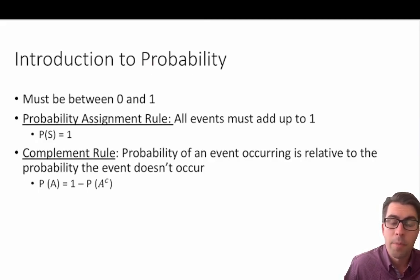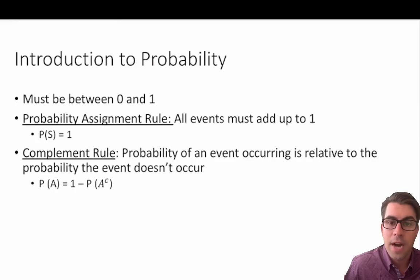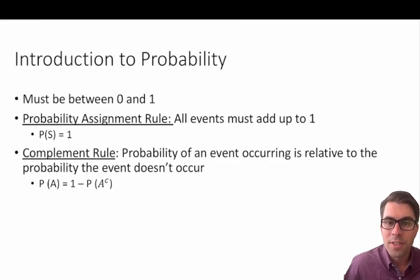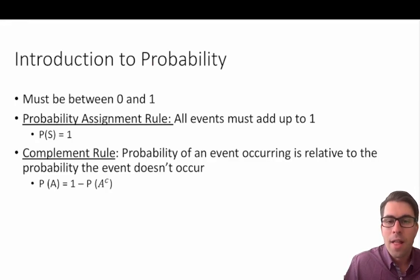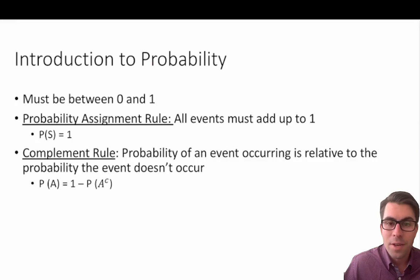Alternatively, a probability of 1 means with absolute certainty, every single time, without fail, this event will occur. A good example, assuming the world keeps spinning on its axis, is that tomorrow morning the sun will come up. It may be blocked by clouds, or there may be smog, but no less the sun would be in a visible spot. So with a probability of 1, the sun will come up tomorrow.